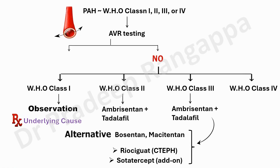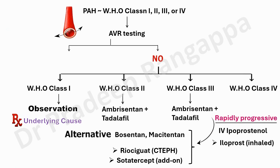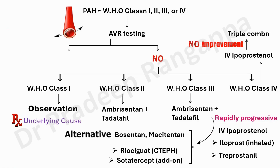If it is WHO class 4, which are the typical patients who come to ICU with high PA pressures — like the patient we have now with CO2 at 70-80 and PA pressures at 85 — and if they are rapidly progressive, you have to use salvage measures like IV epoprostenol, which is a prostacyclin. Or you can use inhaled iloprost or treprostinil. If there is no improvement, multiple combinations and even triple combinations have to be used, and the patient has to be enrolled for lung transplantation or atrial septostomy.